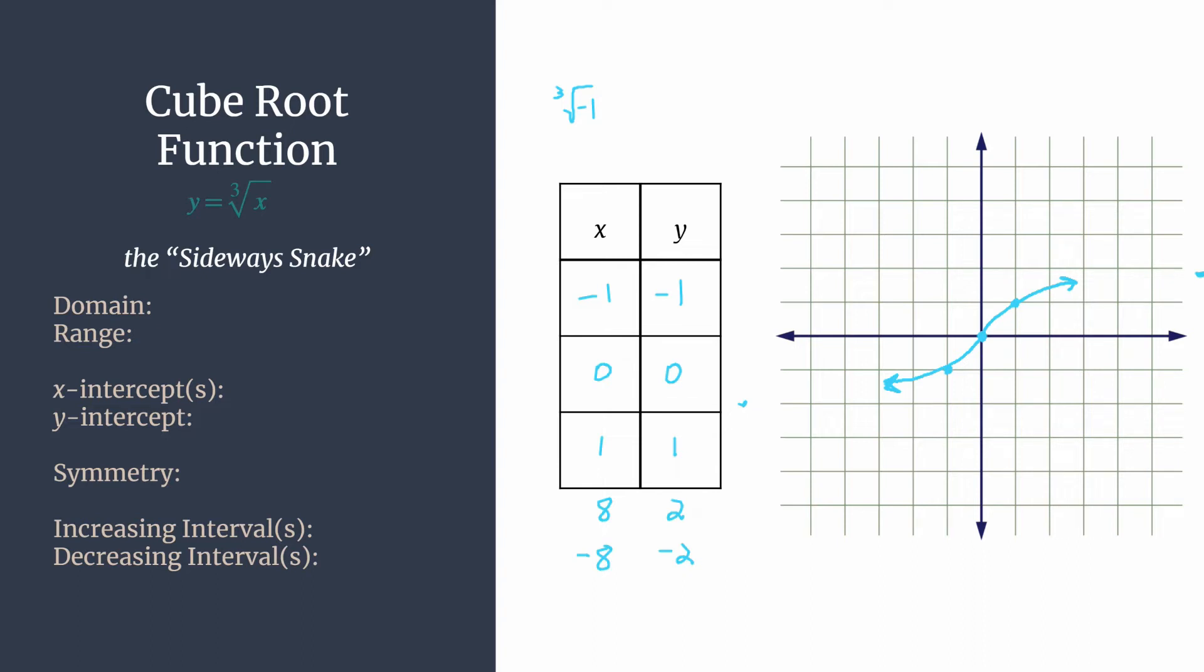Remember, domain is just listing all the possible x's for the graph and range is listing all the possible y's. Okay, so domain, all the possible x's. Looking at these arrows on the ends, we should be seeing,